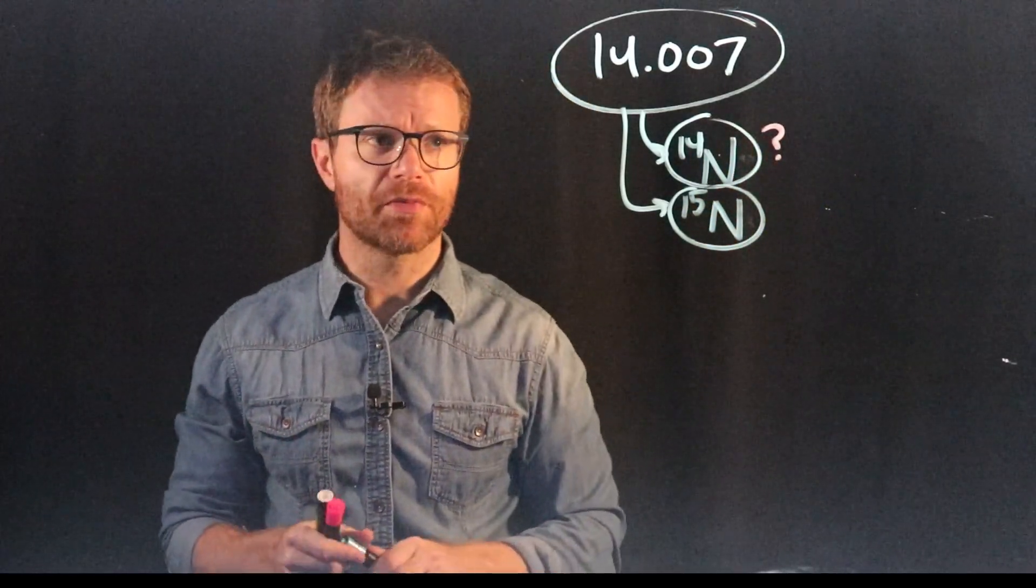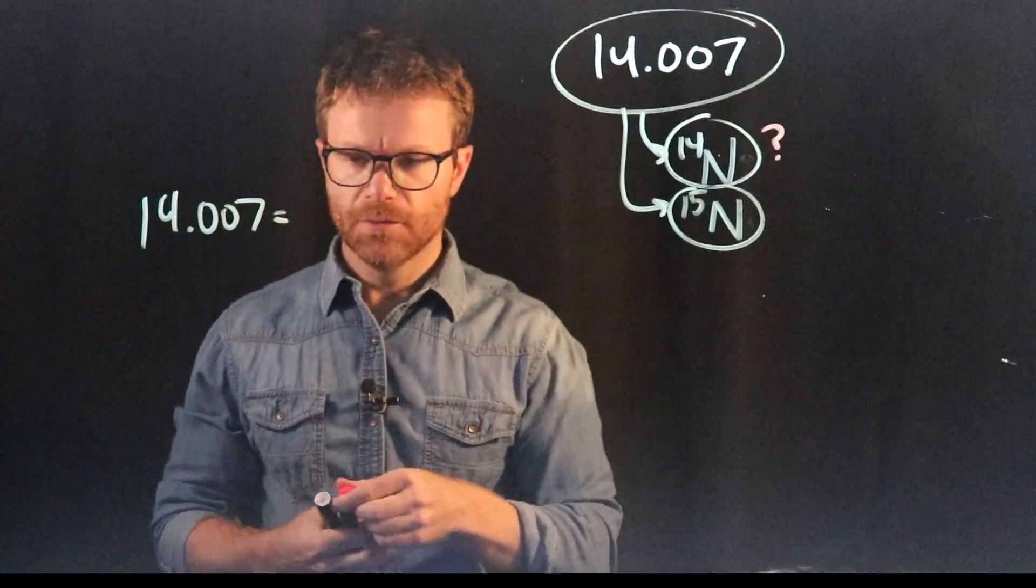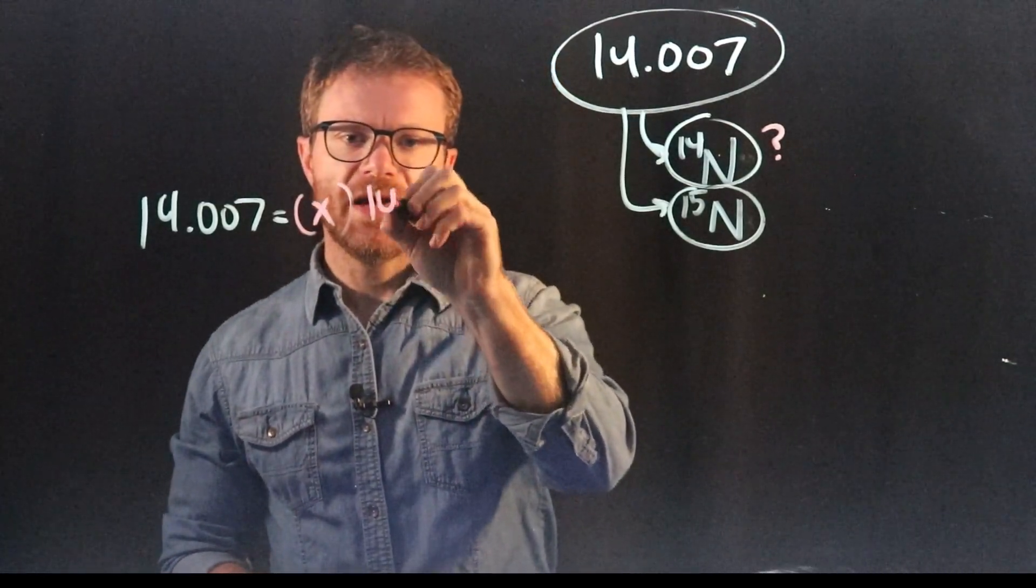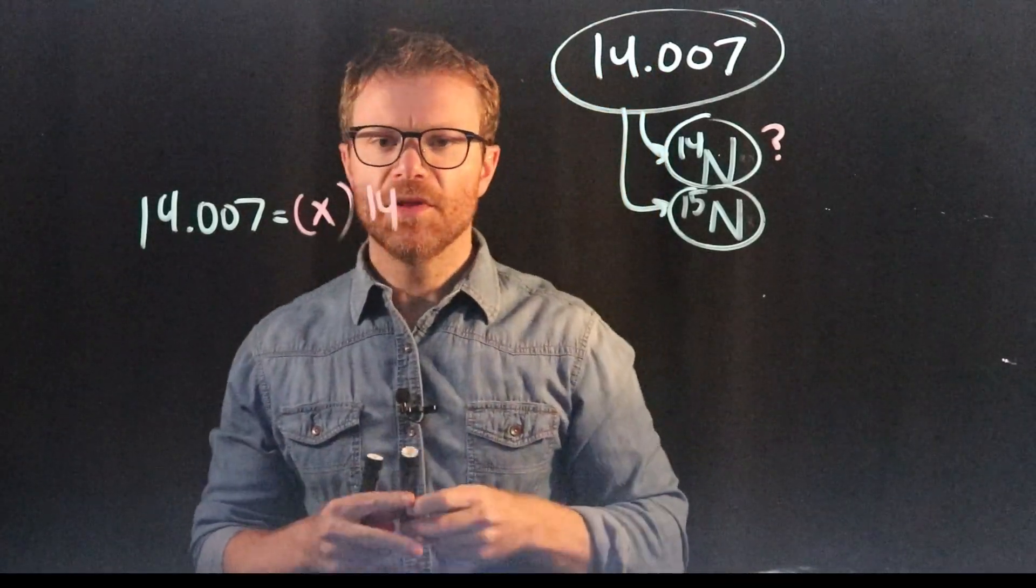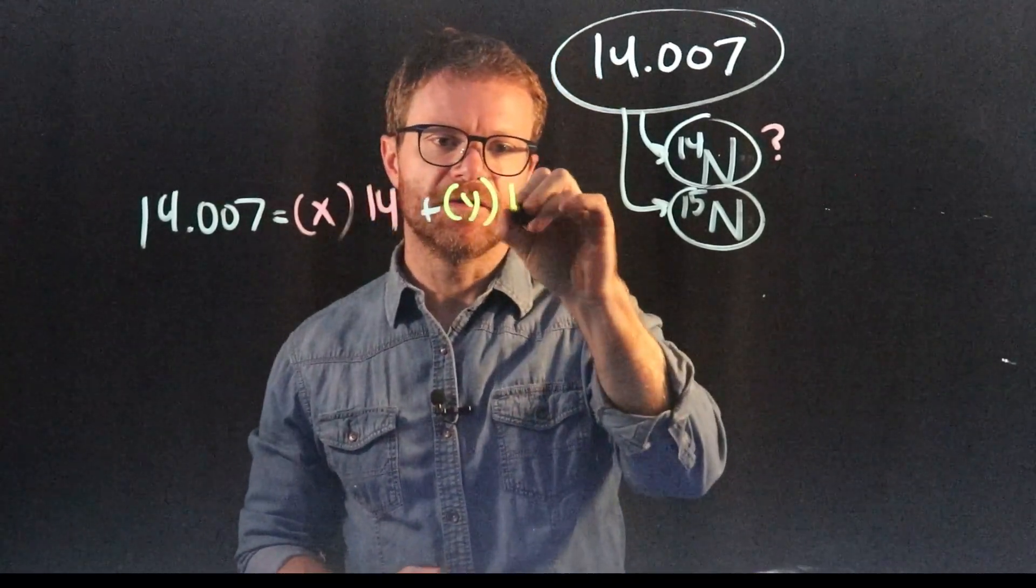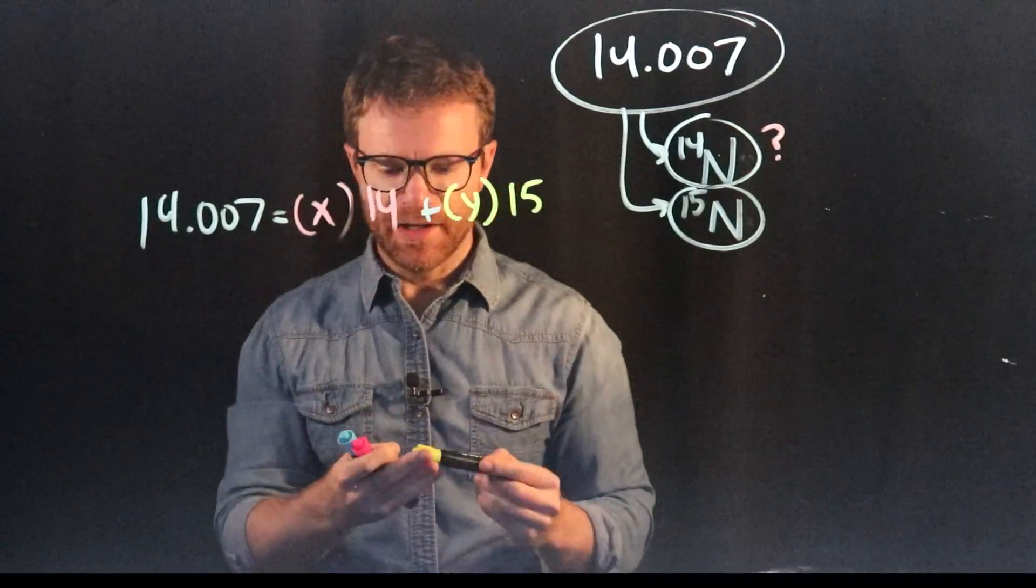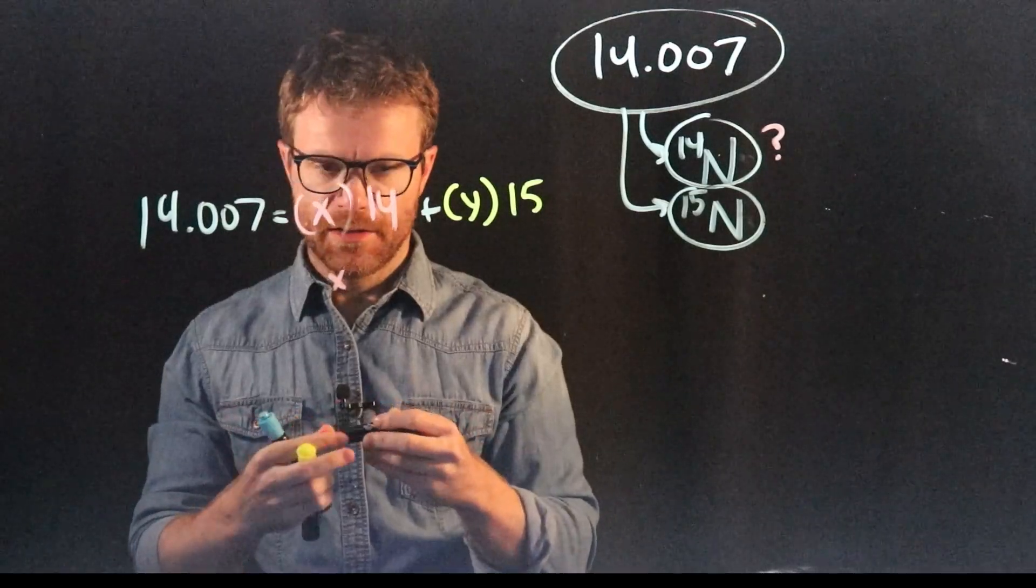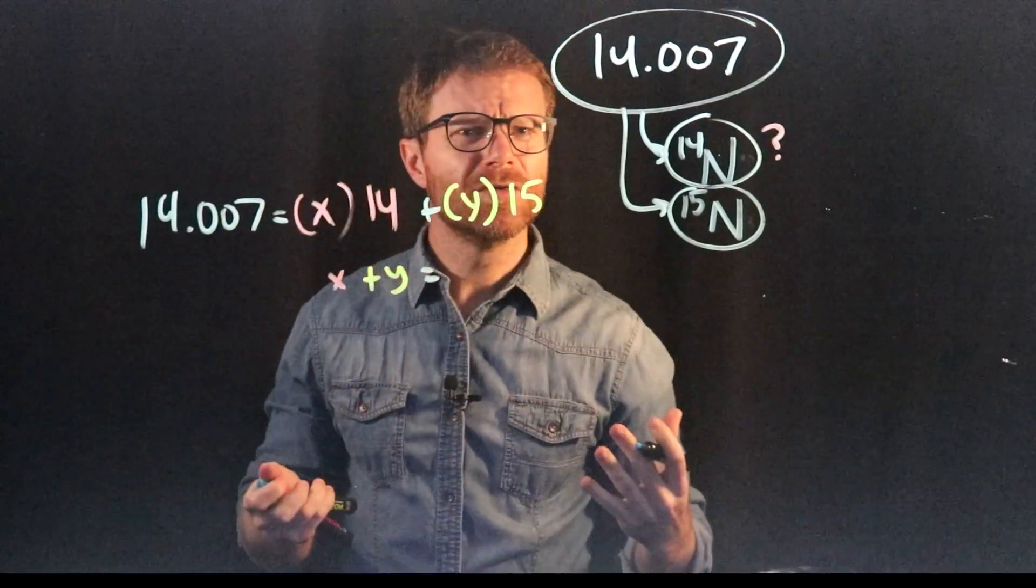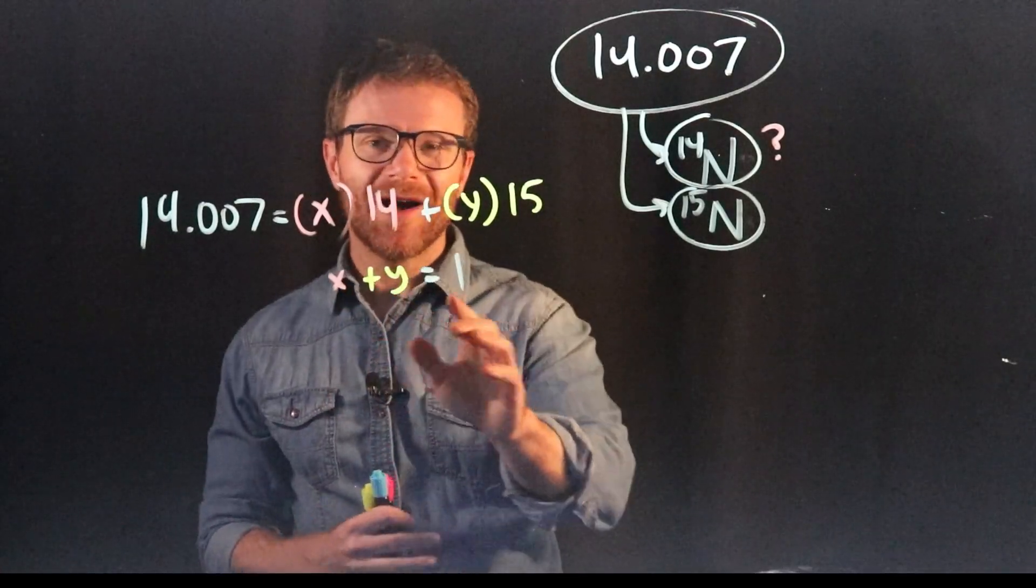So that actually means we could set this up as an algebra problem. For instance, we'd say the average mass, 14.007, is equal to however much N14, we'll call that X because we're not that creative, and the mass of N14 is 14, plus however much, we'll call that Y, N15. And the mass of N15 is 15. And again, we know something else about X and Y, and that is X plus Y is equal to 100. But let's not use percentages, let's use decimal form, it'll be easier for our math. So X plus Y is equal to 1.